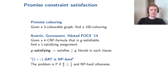Another such problem was considered recently by Austrin, Guruswami, and Håstad. Given a k-CNF formula that is g-satisfiable — meaning any assignment must satisfy at least g literals in every clause — can you find a 1-satisfying assignment? They proved this is solvable in polynomial time if g/k ≥ 1/2 and NP-hard otherwise, dubbing it '2+ε SAT is NP-hard' because it generalizes the fact that 2-SAT is easy and 3-SAT is NP-hard.